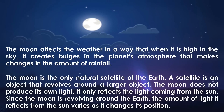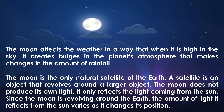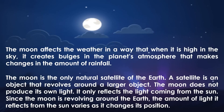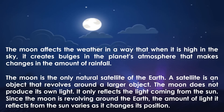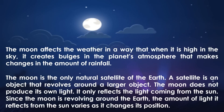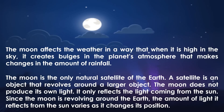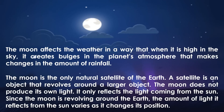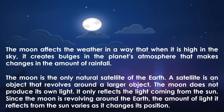A satellite is an object that revolves around a larger object. The moon does not produce its own light — it only reflects the light coming from the sun. Since the moon is revolving around the Earth, the amount of light it reflects from the sun varies as it changes its position.